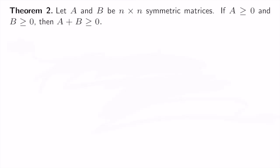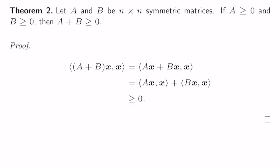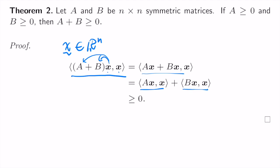Next theorem: suppose we have two n-by-n matrices A and B. If both are positive semi-definite, then their sum is also positive semi-definite — positive semi-definiteness is preserved under addition. The proof is easy: let x be any vector. Calculate the inner product of (A+B)x and x. Distribute x and use bilinearity to split into two terms. By assumption each term is non-negative, so their sum is non-negative.